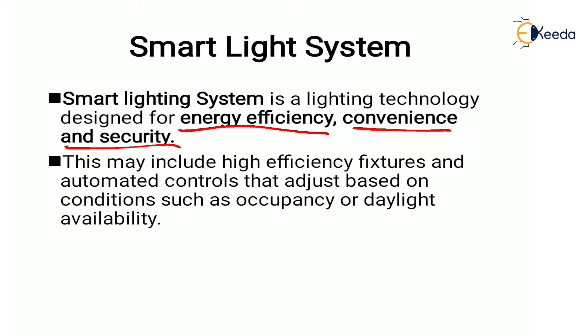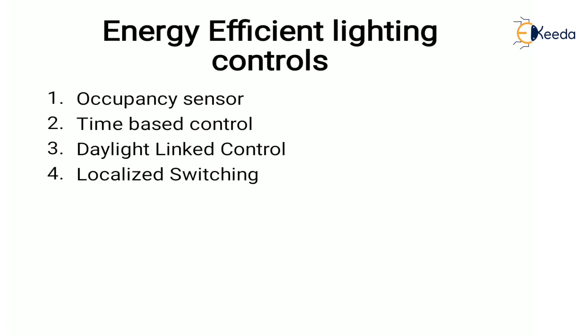Let us see how the automated controls are implemented — energy efficient lighting controls. The energy efficient lighting controls are: first, the occupancy sensor; next, time-based control; next, daylight linked control; and the last is localized switching. Let us see them one by one.